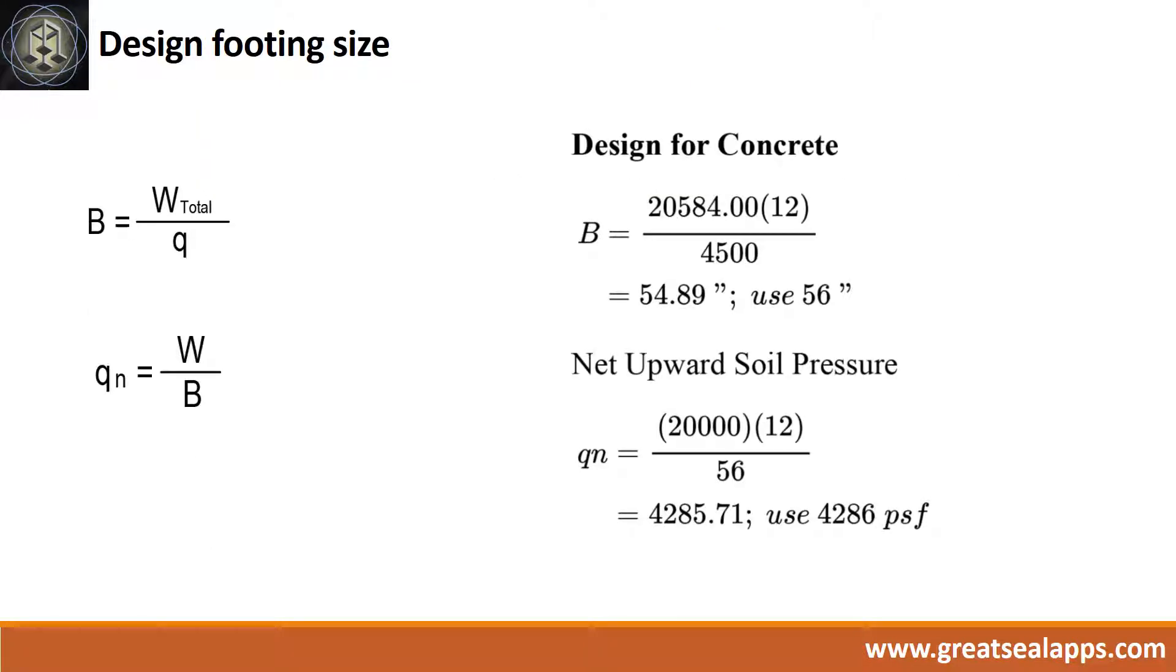Given W equals 20,584 pounds per foot and q equals 4,500 PSF. The width of footing is 56 inches. Net upward soil pressure is 4,286 PSF.